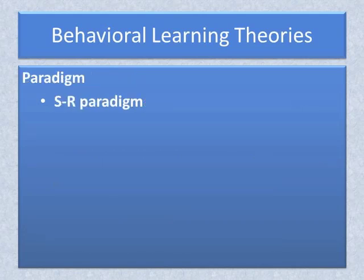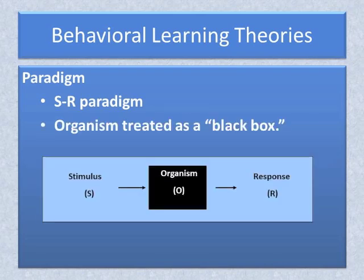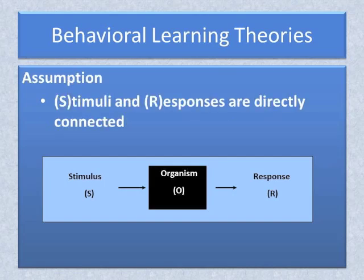The behavioral learning theory is represented as an S-R paradigm, with the organism — and remember that this term includes human beings as one type of animal — treated as a black box. It is recognized that activity is occurring within the organism, but because it is not directly observable by the researcher, that is not considered as part of the laws of learning. Therefore, behaviorists hypothesize that there is a direct connection between a stimulus and a behavior, with no need to consider what might be happening inside the organism.